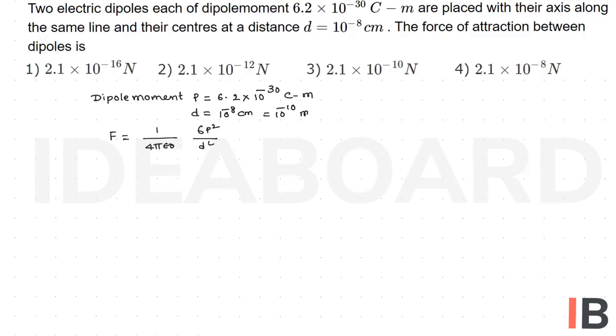Thereby F is equal to 9 × 10^9 into 6 into P squared, the value of P is 6.2 × 10^-30 whole squared. This is d to the power 4, 10^-10 to the power 4.